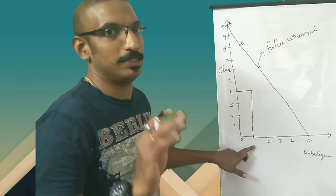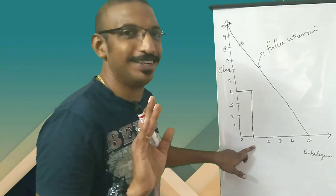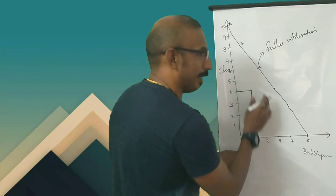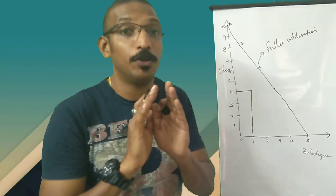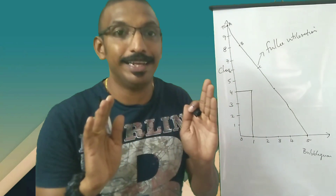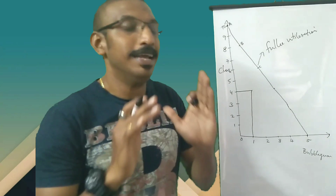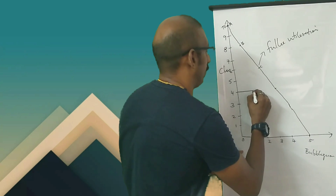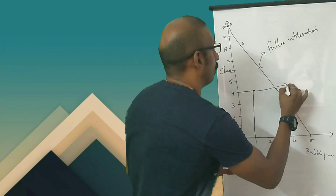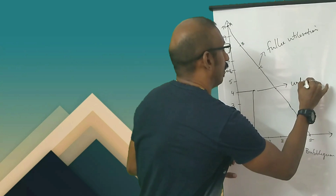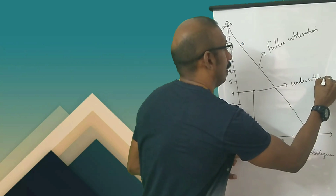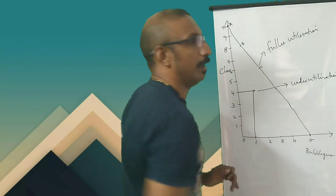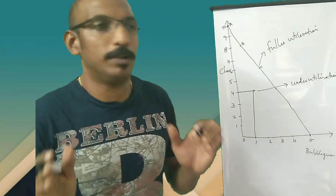Our resources are complete. If you are at any point inside the curve, resources are not completely utilized — or rather, resources are underutilized. So if you are at any point inside the curve, we will say: underutilization of resources.